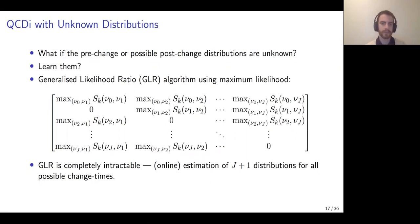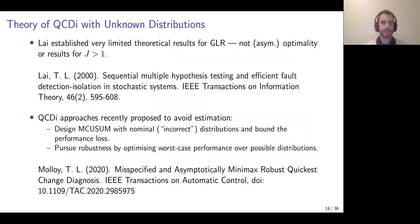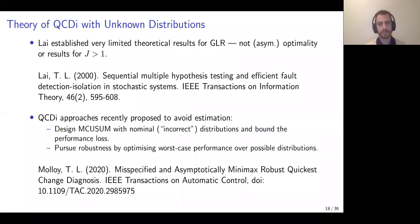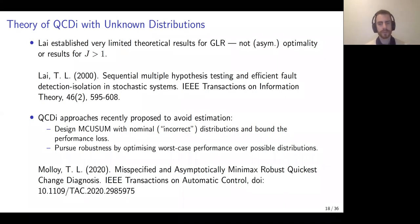Furthermore, the theoretical properties of the GLR algorithm in Quickest Change Diagnosis are somewhat lacking. Lian in 2000 established some limited theoretical results for GLR, but those fall short of asymptotic optimality when the number of change types is greater than one. Relatively recently, Quickest Change Diagnosis approaches have been proposed that avoid estimating or learning the unknown change distributions. There are roughly two approaches: first, designing MQSUM using nominal but admittedly incorrect distributions and bounding the performance loss; second, a more principled minimax robust design approach, seeking to optimize the worst-case performance over sets of possible distributions.